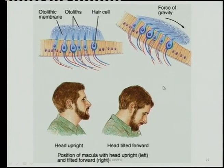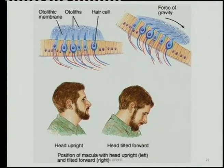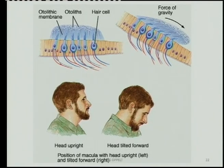In the utricle and the saccule, you also have the otoliths and the otolithic membrane, called the macula. In the macula you get these otoliths — and as a Section A type of question, they may ask you: what are these little crystals of calcium carbonate called? They're actually quite valuable — you've got little marble-like crystals inside you, microscopically small though.